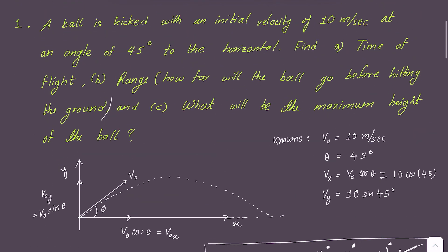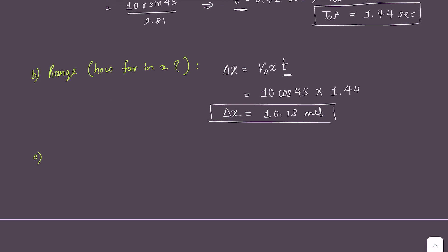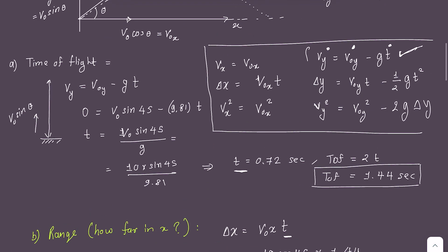Part C asks for the maximum height of the ball. The maximum height is the distance traveled in the Y direction up to the highest point. Initially in the Y direction, the ball has velocity V₀sinθ; gravity slows it down until it stops momentarily at the maximum height. We will use the Y-direction equation: ΔY = V₀ᵧt − ½gt².